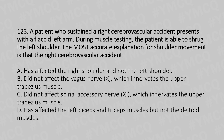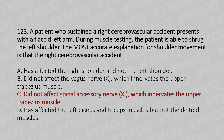During muscle testing, the patient is able to shrug the left shoulder. The most accurate explanation for the shoulder movement is that the right cerebrovascular accident: Option A: has affected the right shoulder and not the left shoulder. Option B: did not affect the vagus nerve which inhibits the upper trapezius muscle. Option C: did not affect the spinal accessory nerve which innervates the upper trapezius muscle. Option D: has affected the left biceps and rhomboid muscles but not the deltoid muscles. The answer is option C.